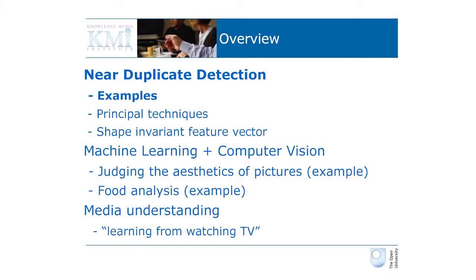I'd like to talk about near-duplicate detection — finding stuff within images that's known, finding known patterns. That's the easy bit, nearly solved. Later we'll switch to machine learning and computer vision, which makes for an interesting intersection between these two disciplines.